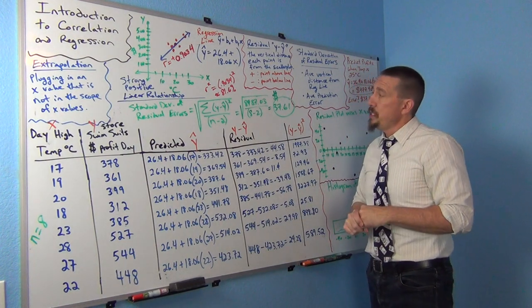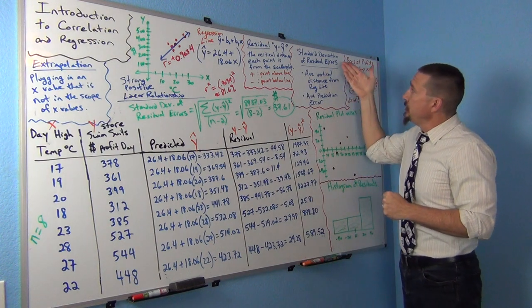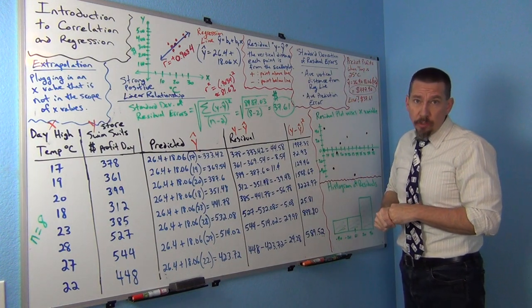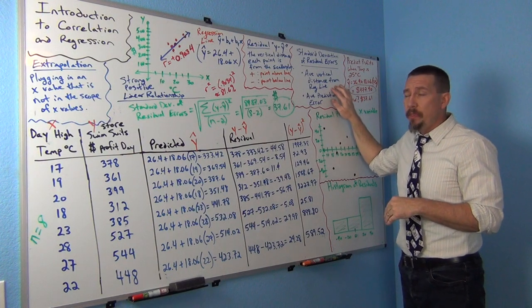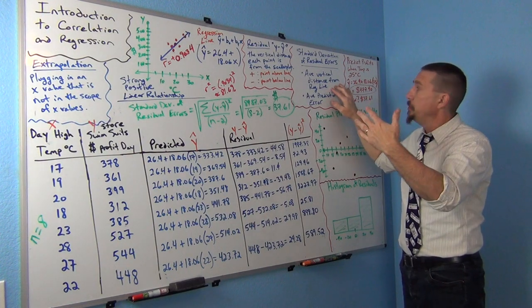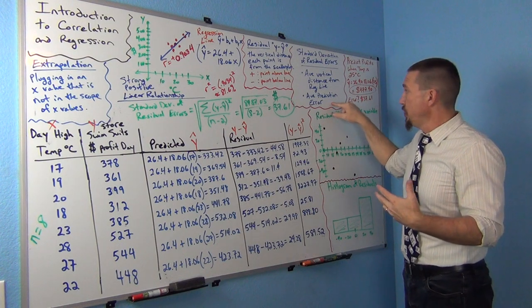And what we found also is that if we sort of average those residuals, we get something called the standard deviation of the residual errors, which tells us the average distance that the points in the scatterplot are from the regression line, and it also gives us the average prediction error.